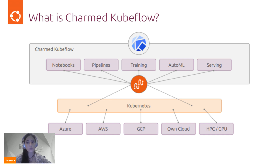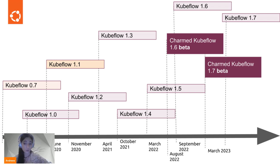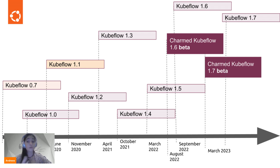It can run on any cloud and it also supports hybrid and multi-cloud scenarios. Canonical's engineering team works closely with the upstream community, so Charmed Kubeflow follows the same roadmap and it's released at the same time for the second year in a row. It has the same capabilities and features, and what it brings new is that two to three weeks of beta where we ask our users for feedback.